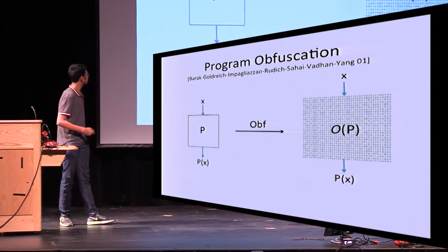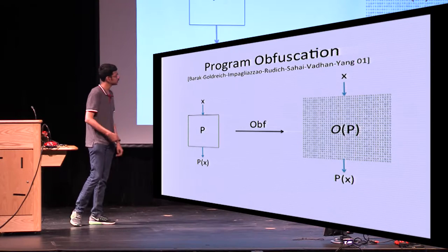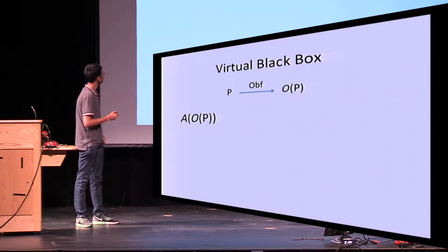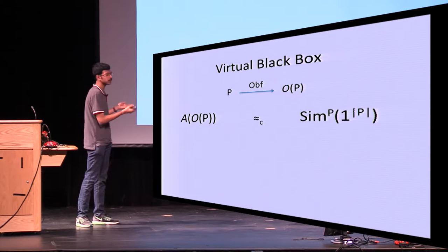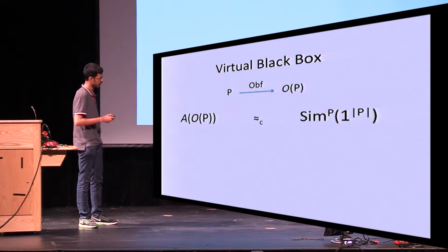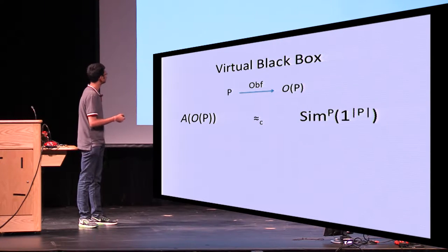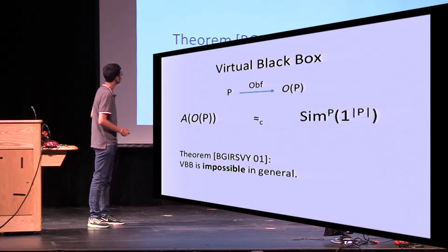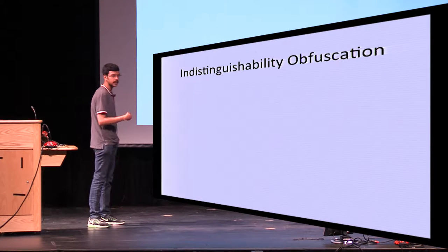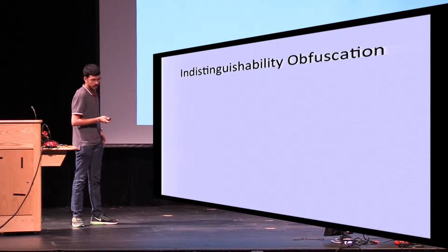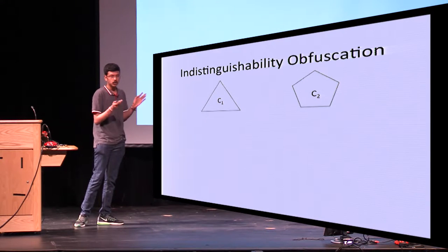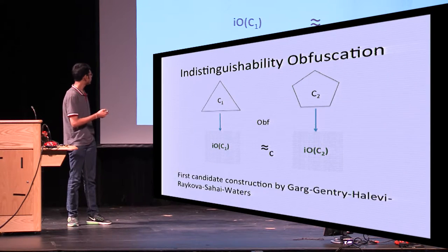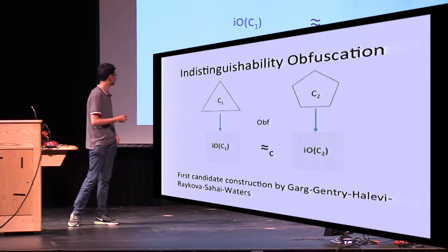Let's review the notion of program obfuscation. An obfuscator is a compiler that takes a program p as input and outputs another program that preserves functionality but hides all implementation details. This is formalized through the notion of virtual black box (VBB), which says that an obfuscated code is equivalent to black box access implementing the same program. Barak et al. in 2001 showed that certain functionalities are not VBB obfuscatable, leading to the natural relaxation called indistinguishability obfuscation (IO): for any two functionally equivalent circuits, an obfuscation of one is indistinguishable from an obfuscation of the other. The first candidate was given by Garg, Gentry, Halevi, Reiko, Asahi, and Waters in 2013.